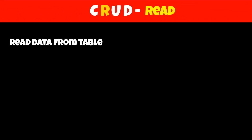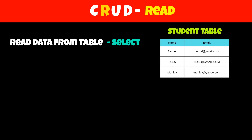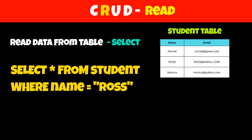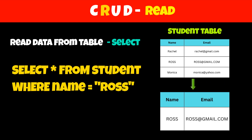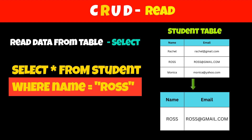The second letter in CRUDE is for Read, which is used to read data from a table. To read data, we have to use a SELECT query. For example, if we want to read data for ROS from our student table, then we can use: SELECT * FROM student WHERE name = 'ROS'. If we want to read all the rows, then we can remove the WHERE clause from the SELECT query.